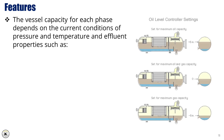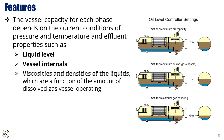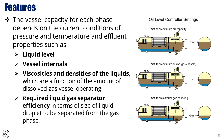The vessel capacity for each phase depends on the current conditions of pressure and temperature, and effluent properties such as liquid level, vessel internals, viscosities and densities of the liquids — which are a function of the amount of dissolved gas — vessel operating conditions, and required liquid-gas separator efficiency in terms of the size of liquid droplet to be separated from the gas phase.